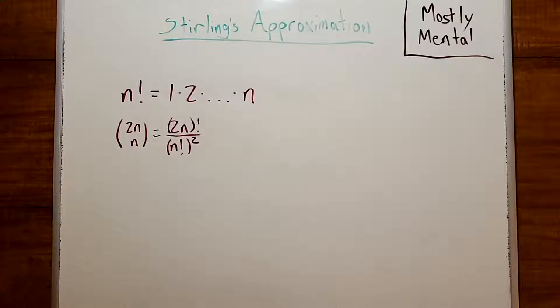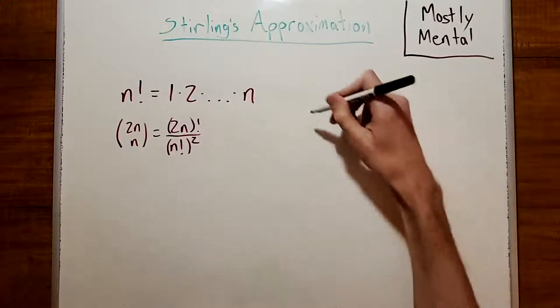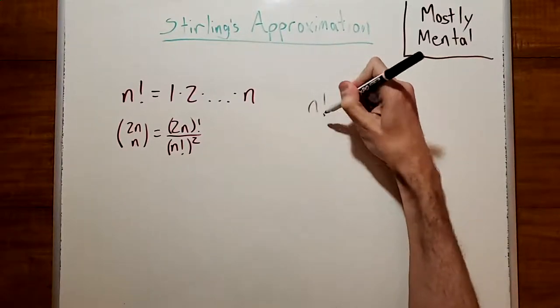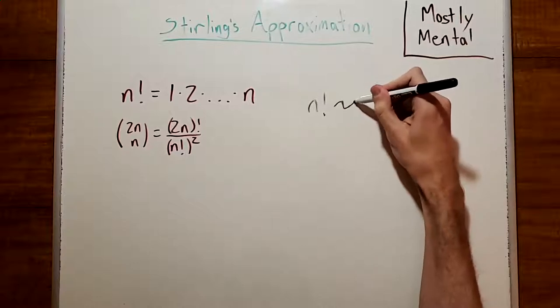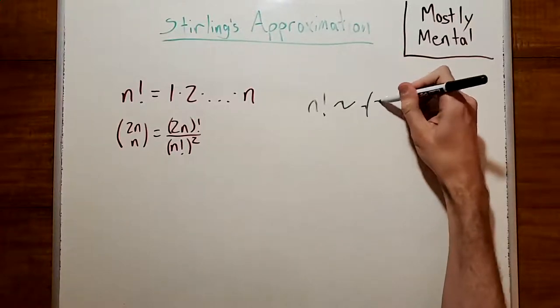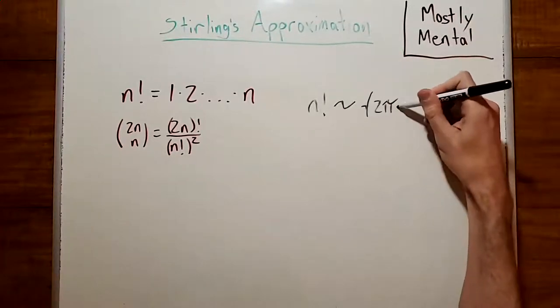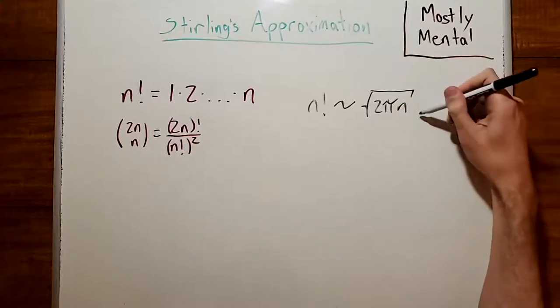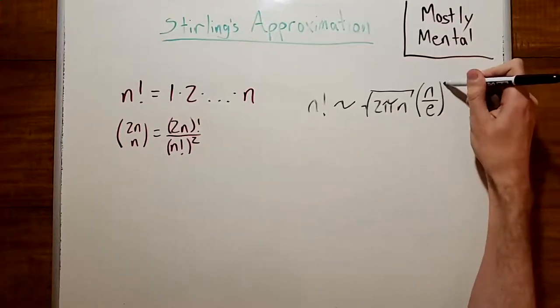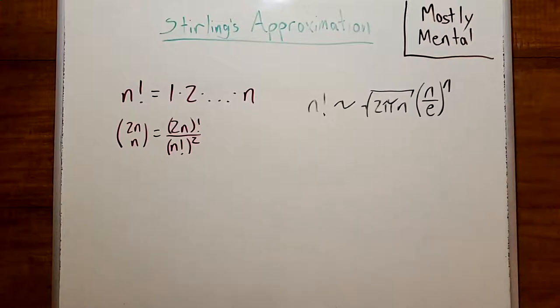So, without further ado, here's the formula. n factorial is approximately equal to the square root of 2 pi n times n over e to the n. Where on earth does that come from? And what are pi and e doing in there?